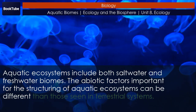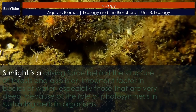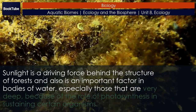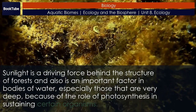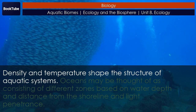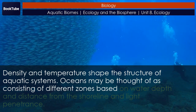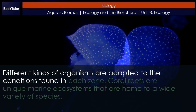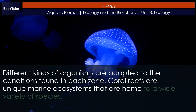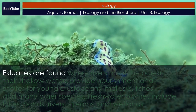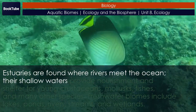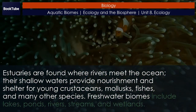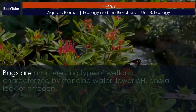Section summary: Aquatic ecosystems include both saltwater and freshwater biomes. The abiotic factors important for structuring aquatic ecosystems can differ from those in terrestrial systems. Sunlight is a driving force behind the structure of forests and is also an important factor in bodies of water, especially those that are very deep, because of the role of photosynthesis. Density and temperature shape the structure of aquatic systems. Oceans may be thought of as consisting of different zones based on water depth, distance from the shoreline, and light penetrance, and different kinds of organisms are adapted to the conditions found in each zone. Coral reefs are unique marine ecosystems home to a wide variety of species. Estuaries are found where rivers meet the ocean, and their shallow waters provide nourishment and shelter for young crustaceans, mollusks, fishes, and many other species. Freshwater biomes include lakes, ponds, rivers, streams, and wetlands; bogs are an interesting type of wetland characterized by standing water, lower pH, and a lack of nitrogen.